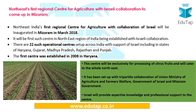Another important news from the Northeast: the first regional center for agriculture with Israeli collaboration is to come up in Mizoram. This is not the first such collaboration center in India overall — there are already 22 operational centers — but it is the first in the northeastern region. This center will be exclusively for the processing of citrus fruits, catering to the needs of the whole Northeast. Israel will provide expertise, knowledge, and professional support. The first such center was operational in Haryana in 2008.